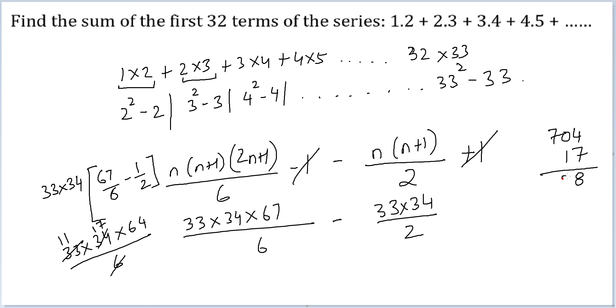11 into 17 is 187. 187 into 64. Working through the multiplication: 4, 9, 2, then 4, 0, 7, giving 8, 6, 9, 1. The answer is 11,968.